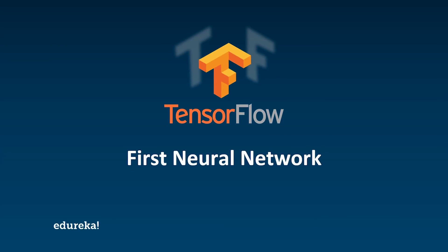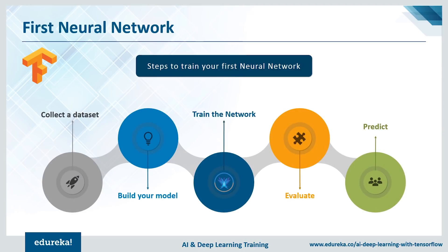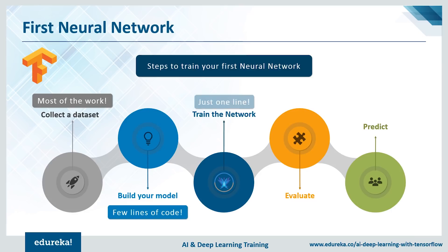Moving on, let's look at how a neural network works with TensorFlow. First, we collect a dataset — it can be images, audio snippets, or whatever you're trying to classify. With that dataset, we build the model with its architecture and basic node structure. Next, we train the network so it can understand something from the data. After training, we evaluate how well it performs, then predict and ensure the machine learned well. In TensorFlow, collecting the data is most of the work — building and establishing the model is just a few lines of code, and even training, evaluation, and prediction can each be a single line.